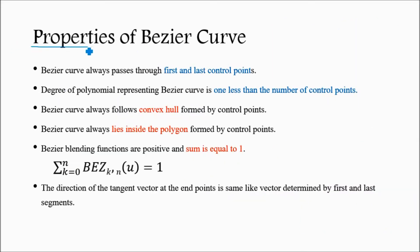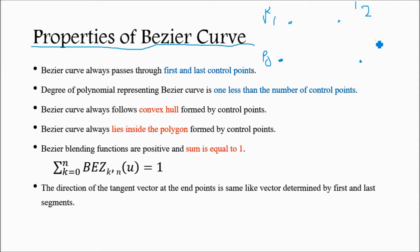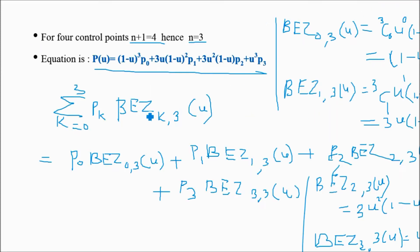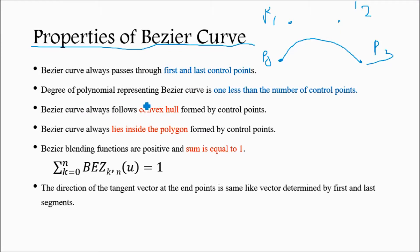Now the properties of the Bezier curve. First, the Bezier curve always passes through the first and last control points. Control points control the shape of the curve. If the control points are p0, p1, p2, and p3, the curve passes through p0 and p3. Second, the degree of the polynomial representing the Bezier curve is one less than the number of control points. With four control points, the maximum degree is three.